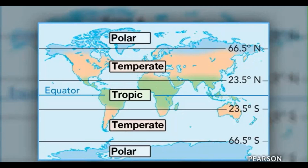One factor that affects the climate of a location is its latitude. There are three separate climate zones that are based on latitude. One is called the tropical zone and includes the equator and the areas on both sides of it, from 23.5 degrees south of the equator to 23.5 degrees north of the equator. Because the sun hits this area most directly all year, the tropical zone is mainly a warm climate.